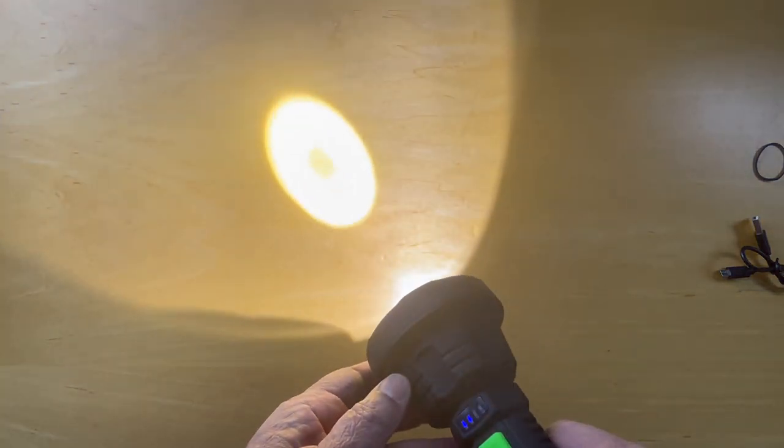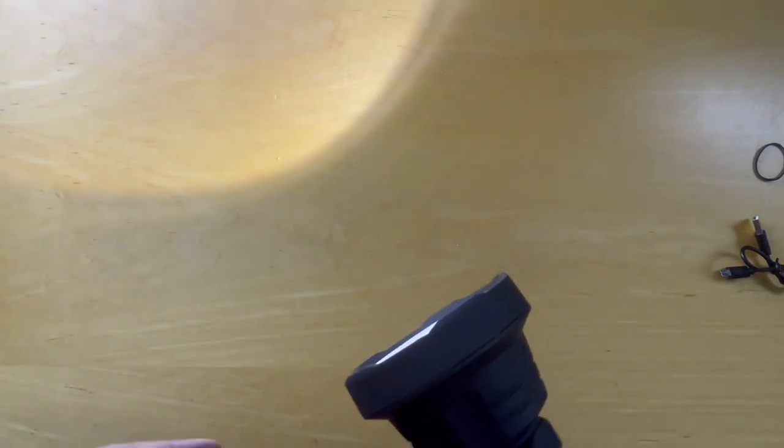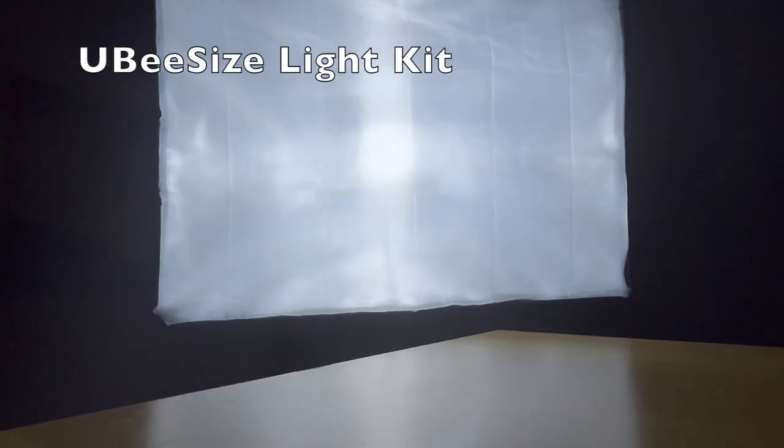So let's take a look at this light shining on a surface. Here we're looking at one of the lights that we use for video production. Let's turn on the first mode, the second mode, the third mode—much softer light—and off.